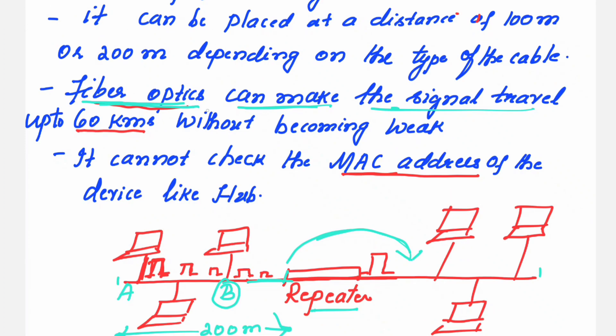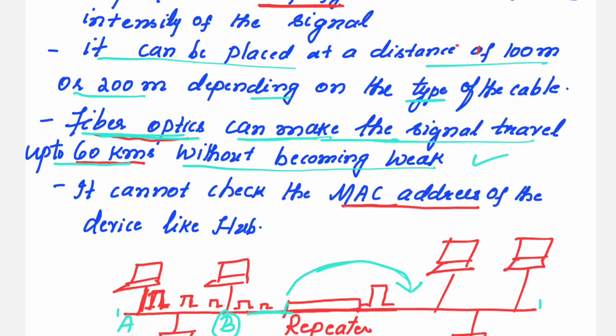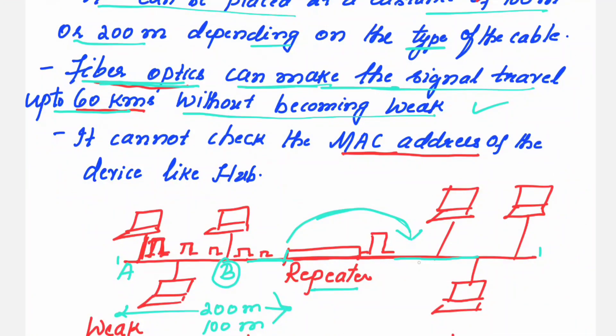If the transmission medium is fiber optics, it can make the signal travel up to 60 kilometers without becoming weak. So, what cable you are using here, the type of the cable matters to decide the position of the repeater that has to get placed.